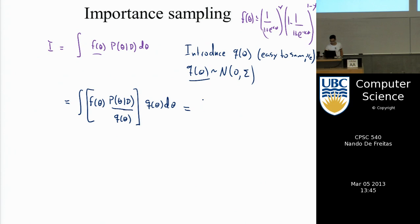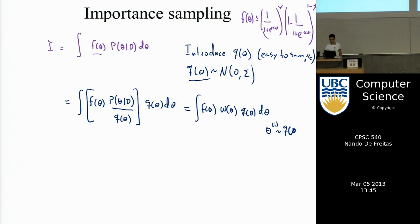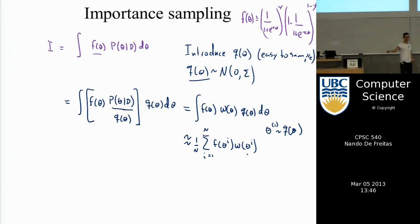This becomes f of theta times the ratio of p of theta to q of theta — we call this ratio w of theta, the importance weight. If you can draw samples theta_i from q of theta — from a Gaussian — you can approximate this as 1 over n times the sum of f of theta_i times w of theta_i. You draw samples from another distribution, reweight them, and get the right approximation.